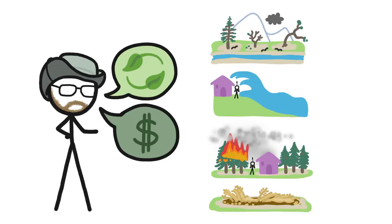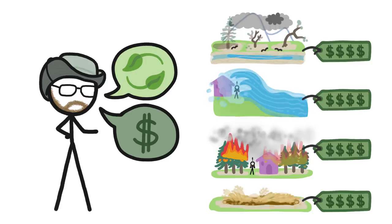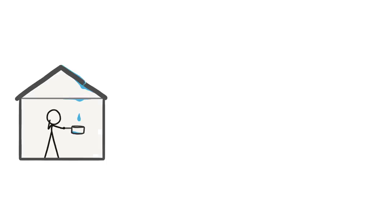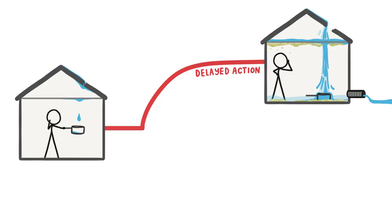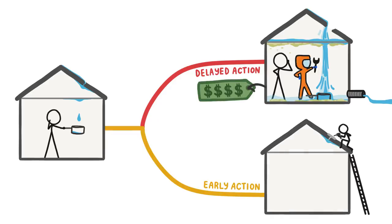Climate change is going to be expensive, especially if we don't stop it. It's like if your house has a leaky roof. You can either wait until your entire house is moldy and rotten to have it fixed, or you can fix the leak now and save a lot of money on repairs.